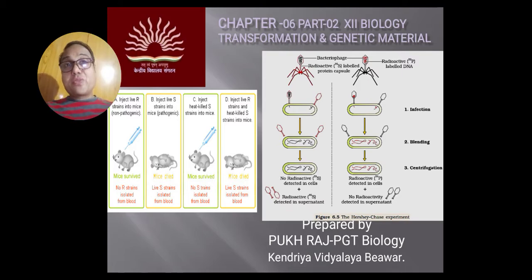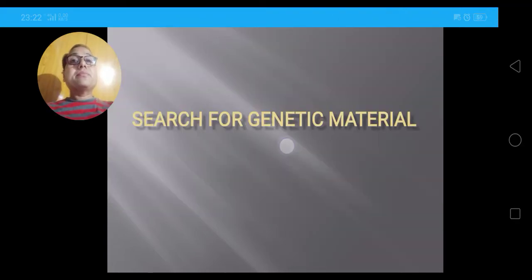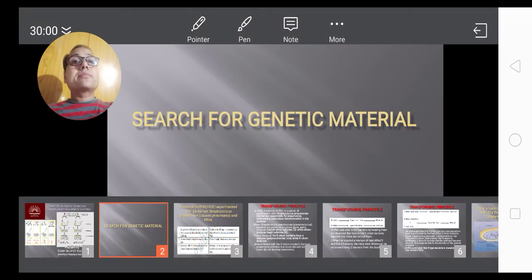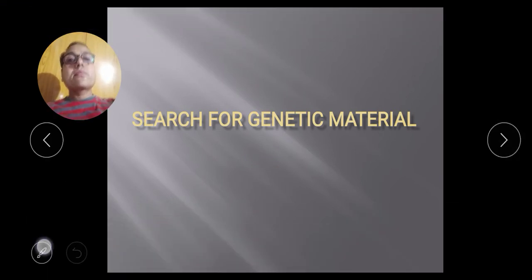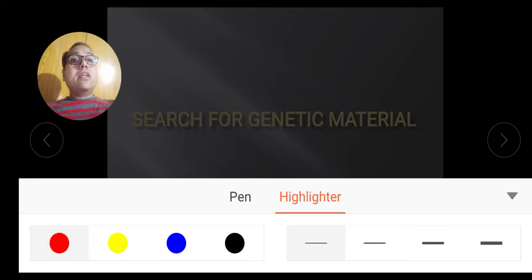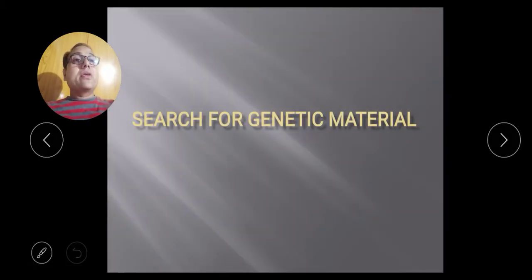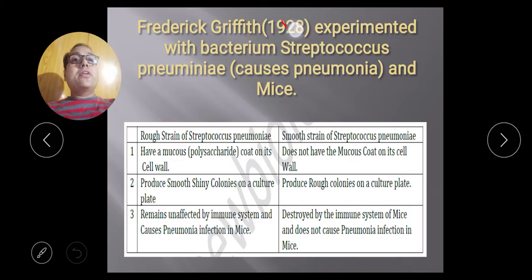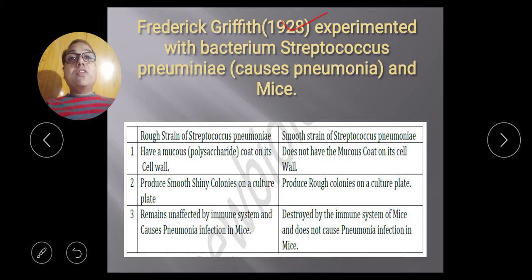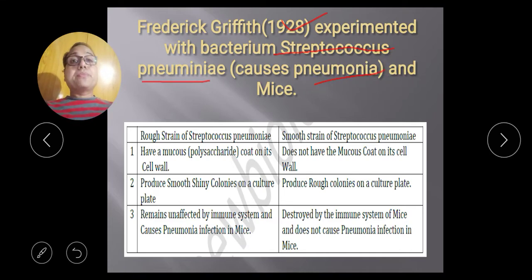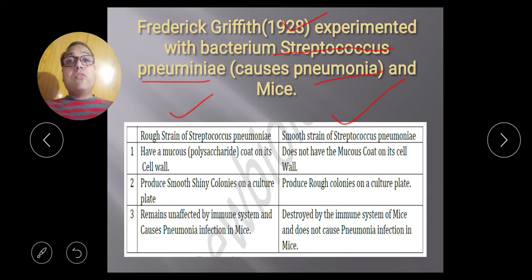The first topic is Transformation. In search of genetic material, in 1928, Griffith experimented with the bacterium Streptococcus pneumoniae, which causes pneumonia, and mice. There are two strains of this bacteria — one is R and the second is S.